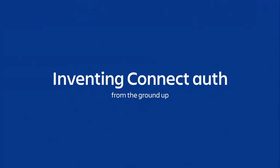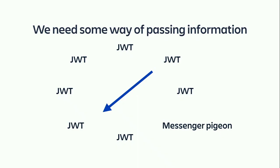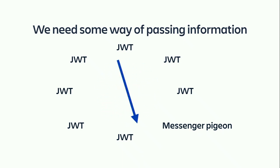Now we all really care about this topic. I'm going to walk you through how we're going to invent Connect Auth from the ground up, instead of telling you how it works today. Our problem: how can we design a secure protocol for apps to talk to Atlassian products? Actually, pretty simple — I'll have a PR up this afternoon. With any kind of communication, we need to pick some method of parsing information. Let's randomly pick JWT.